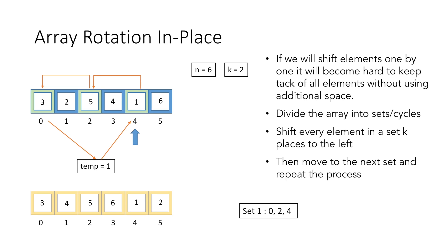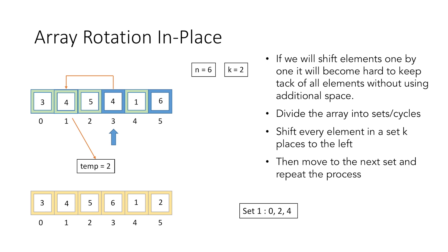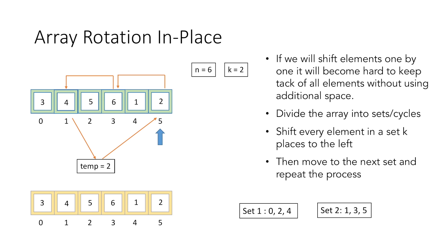We move on to the next set starting at index 1 and store value 2 in temp. The element 4, shifted 2 positions left, comes to index 1, so we move 4 there. We jump to index 3 and move element 6 to index 3. We then jump to index 5, where the element from index 1 — stored in temp — should go, so we move element 2 to index 5. This marks the end of our second set formed by indices 1, 3, and 5.